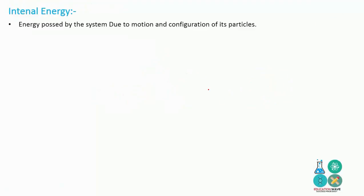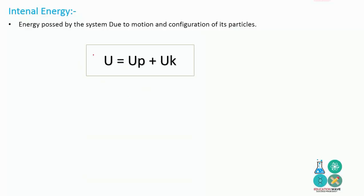Internal energy is defined as the energy possessed by the system due to the motions and configuration of its particles. Mathematically, it is denoted by U, which is equal to UP plus UK, where UP is the potential energy due to configuration of particles.